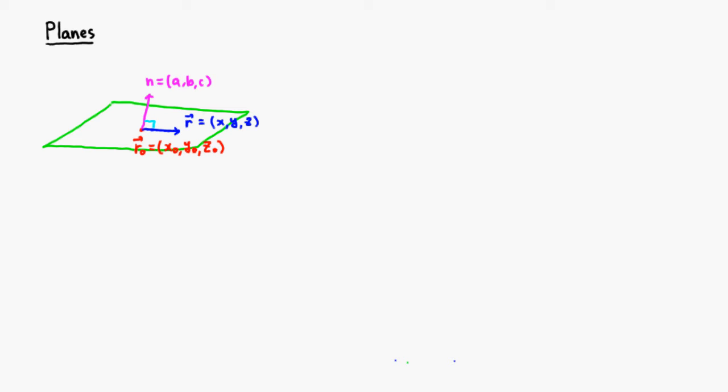since we know that the vector r0 to r is going to be always perpendicular to this normal vector n. So we take the dot product and the dot product should be zero because those two vectors are always perpendicular. All right, so let's start with that.